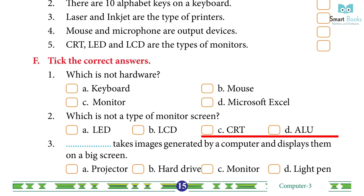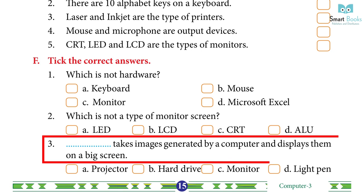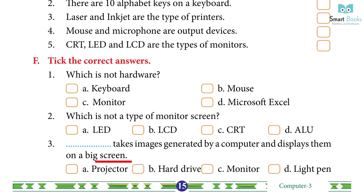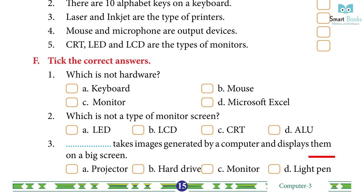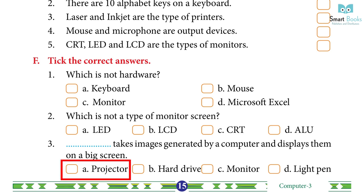3. Dash takes images generated by a computer and displays them on a big screen. A. Projector, B. Hard drive, C. Monitor, D. Light pen. Answer: A. Projector.